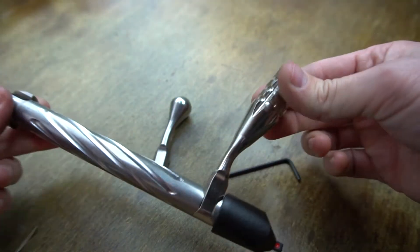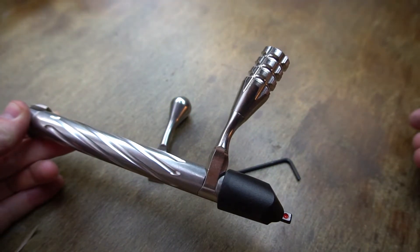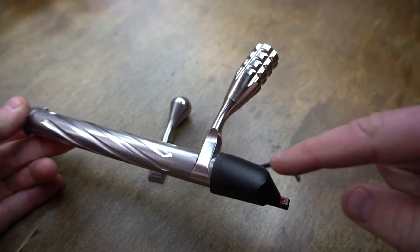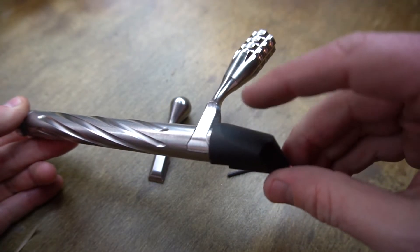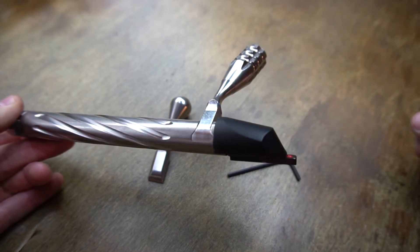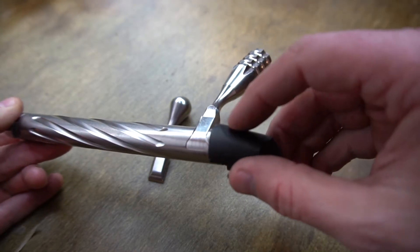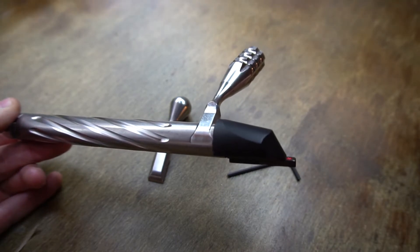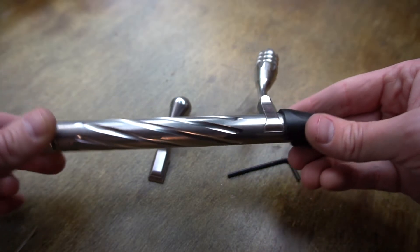Now it's all back together and you've replaced the bolt handle on a Tika in less than five minutes. If you wanted to replace an old Tika T3 plastic bolt shroud with a metal bolt shroud, this happens to be a T3X. It's already got the metal bolt shroud on it. That's the same procedure used to do it.